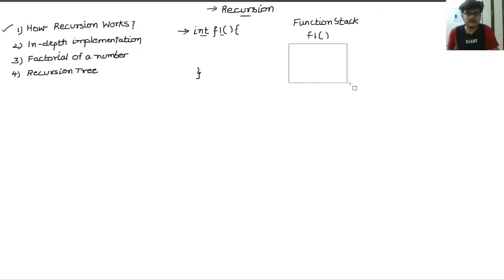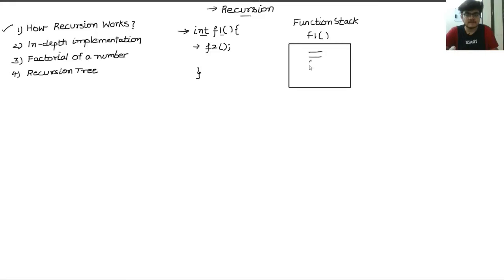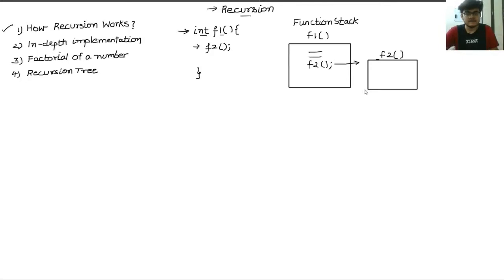Let me draw a stack here. This stack will remain inside the memory. Now let's suppose we call some other function — say F2 — from inside of this function. When the compiler reaches the line that calls F2, it will quickly allocate memory to F2, which is again a function stack. So another function stack is created for this function. This is how memory allocation of functions is done.